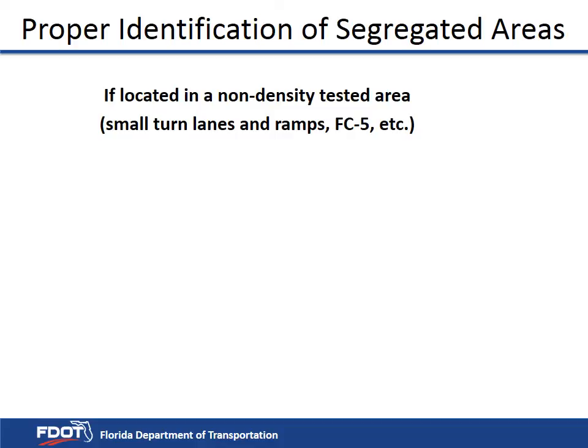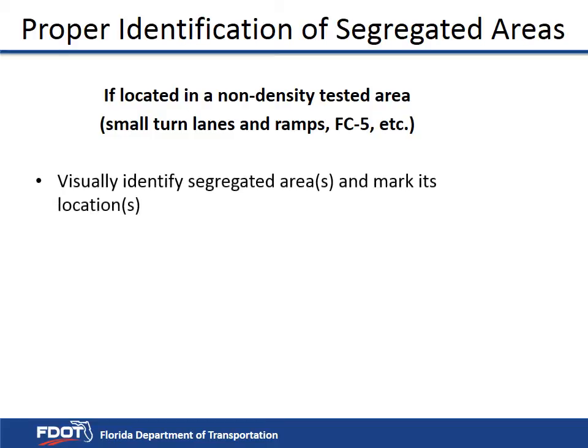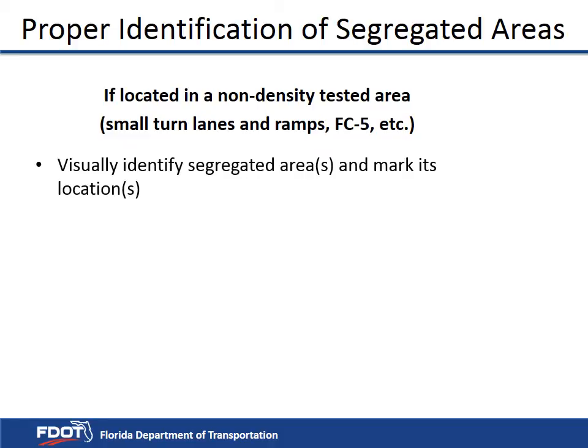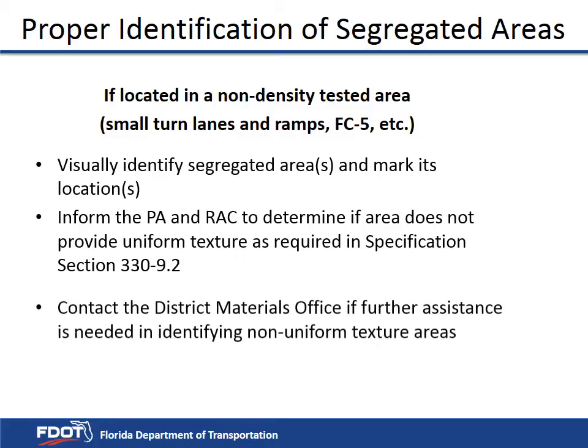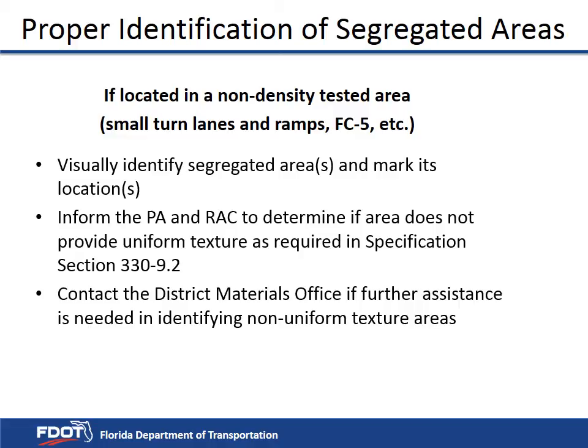If the area is located in a non-density tested area, such as a small turn lane, ramps, or open graded friction courses, first visually identify the segregated areas to be marked and their location. Inform the project administrator to determine the areas that do not provide uniform texture as required in specification section 330-9.2. Department personnel can contact the District Materials Office if assistance is needed in identifying non-uniform textured areas.